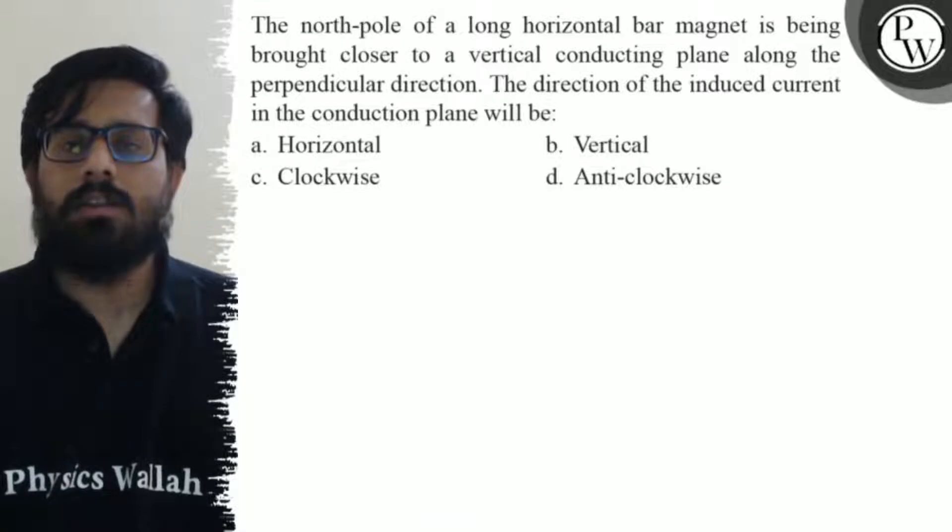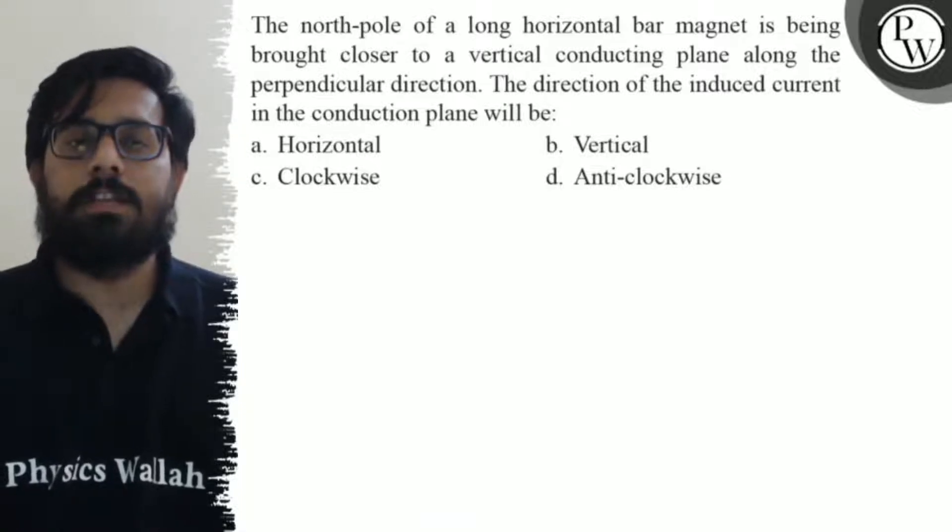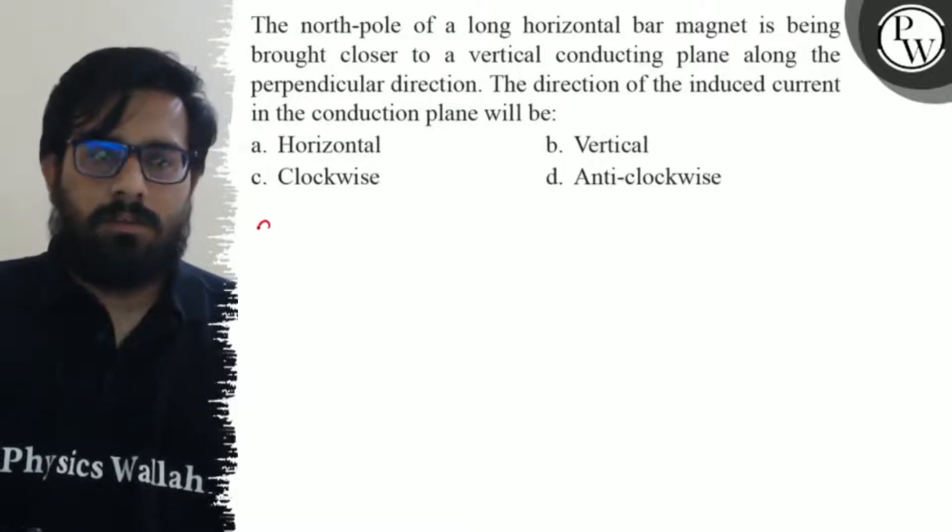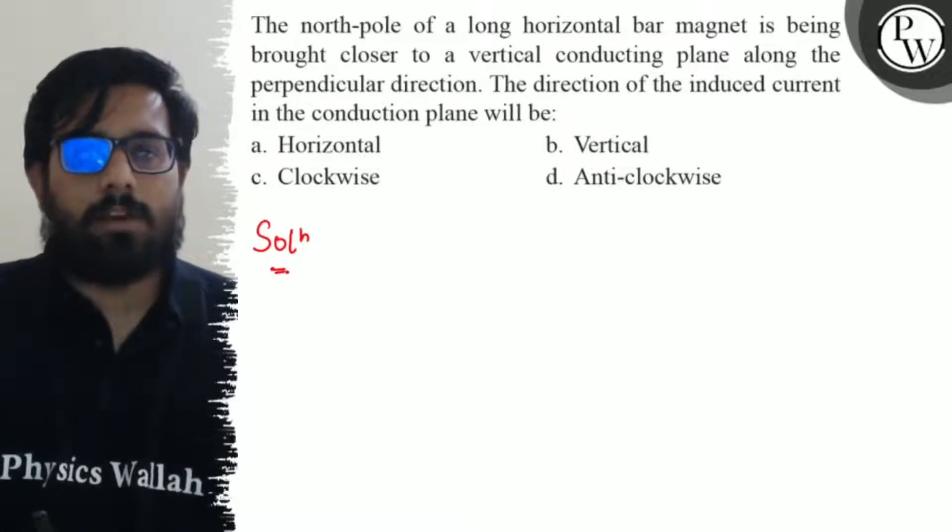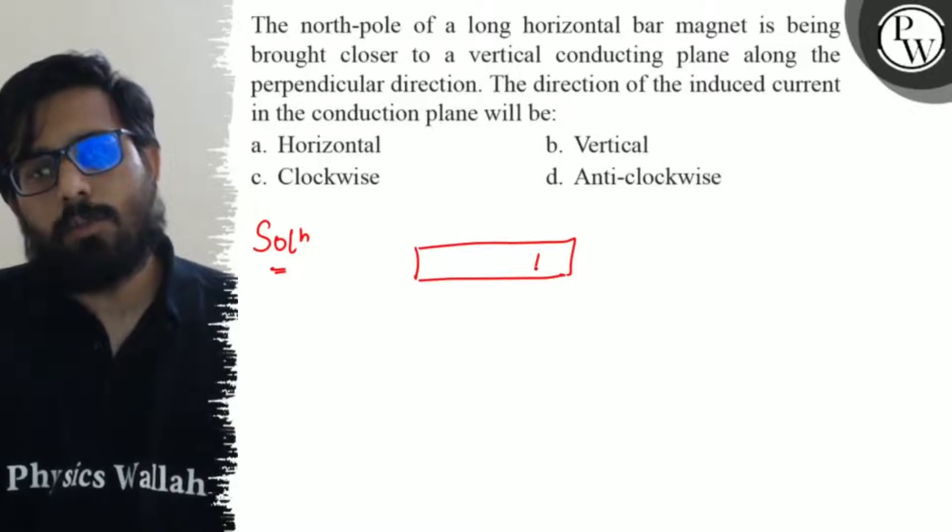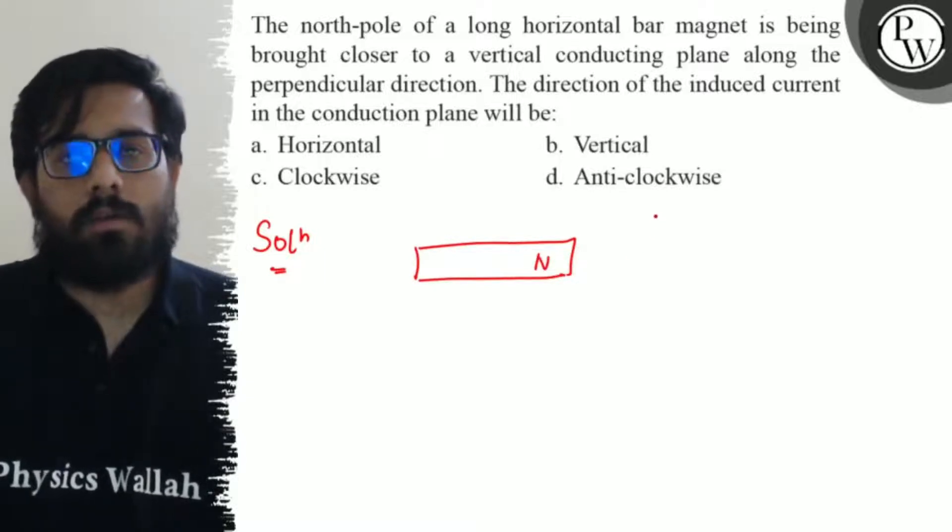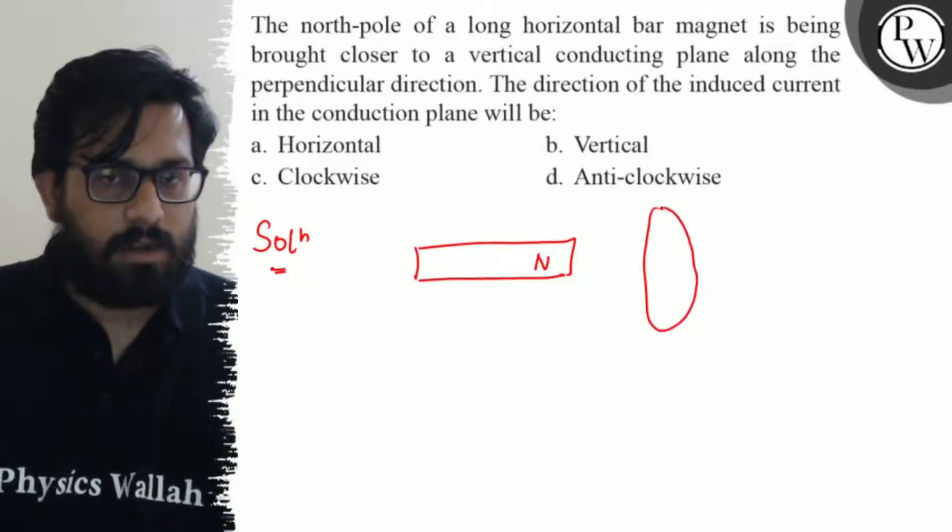The first option is horizontal, second is vertical, third is clockwise, and fourth is anti-clockwise. In this question, we have the north pole of a bar magnet being brought closer to a vertical conducting plane.